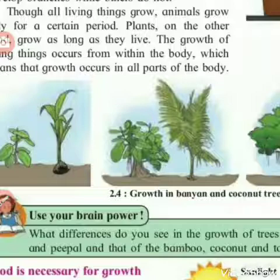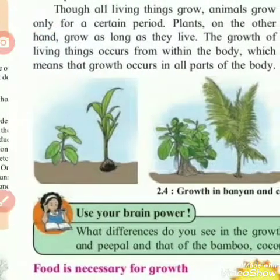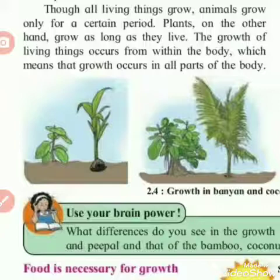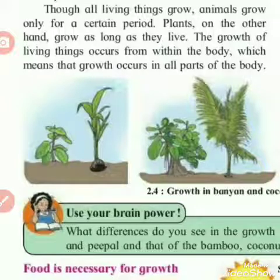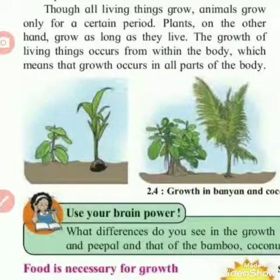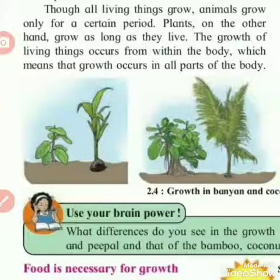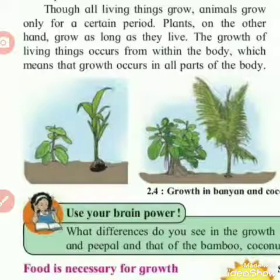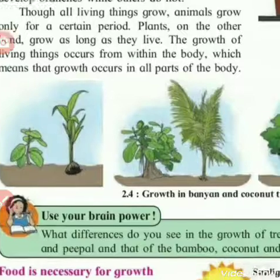All living things grow. Animals only grow for a certain period — we saw this in the last video. Plants, on the other hand, grow as long as they live. The growth of living things occurs from within the body, meaning growth occurs in all parts of the body in animals, while in plants it is mainly the stem that grows.